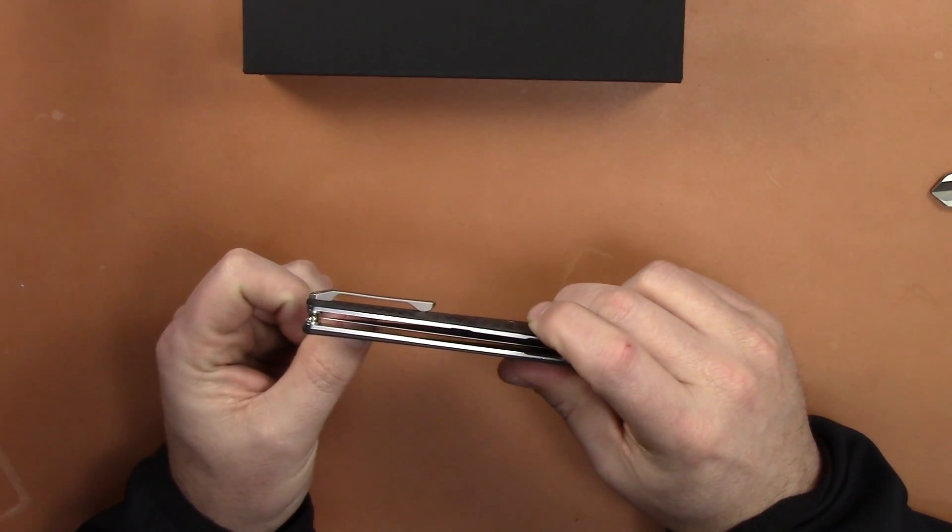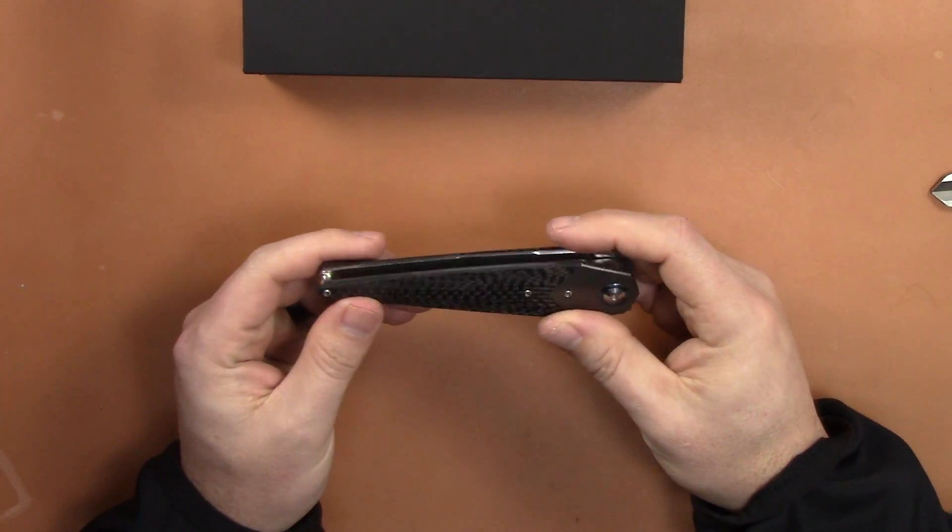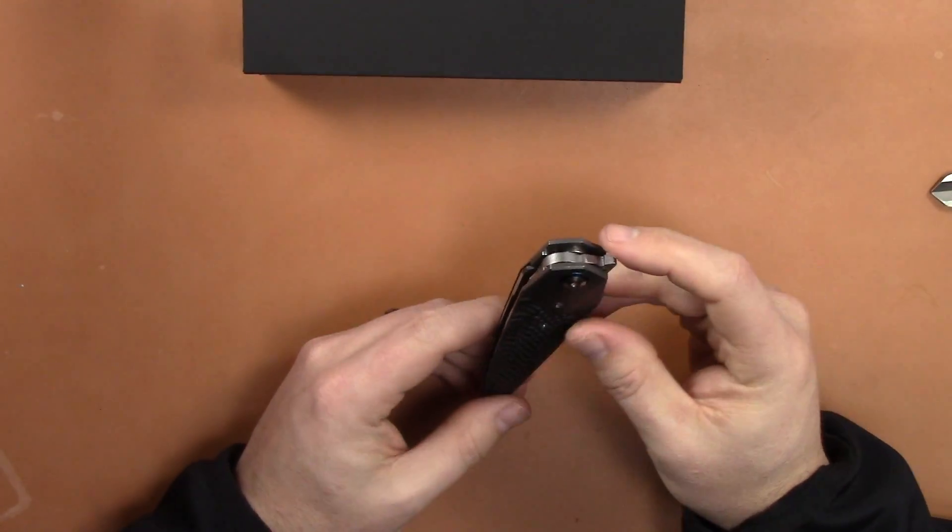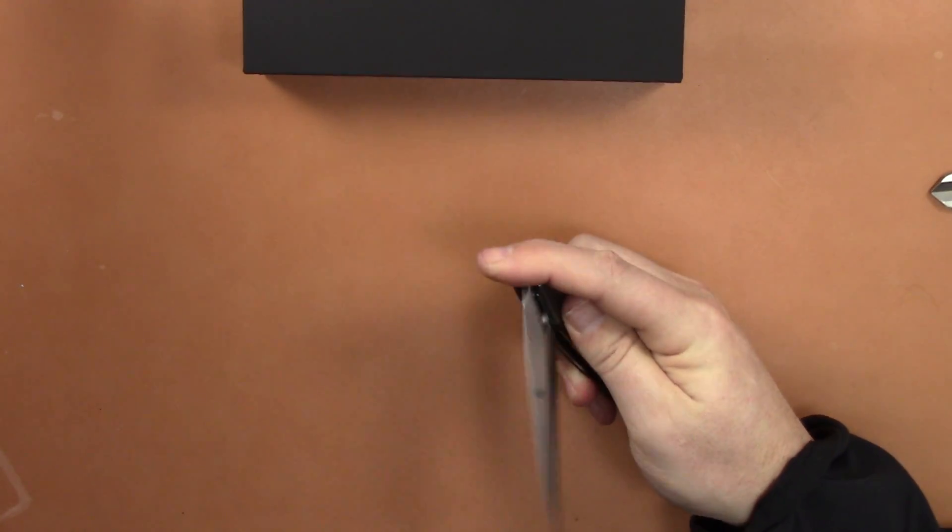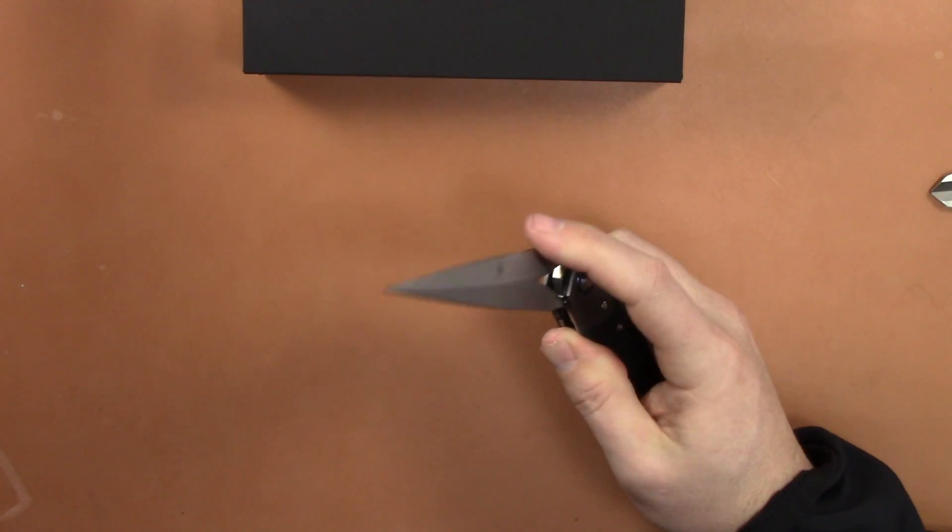I can run my thumbnail all the way along that, it's not scratching it, so that's good, it's safe as well. And then you got your flipper tab up here. Flips very nicely, it's on your typical bearings from Kaiser. I believe they use ceramic in most of their knives.